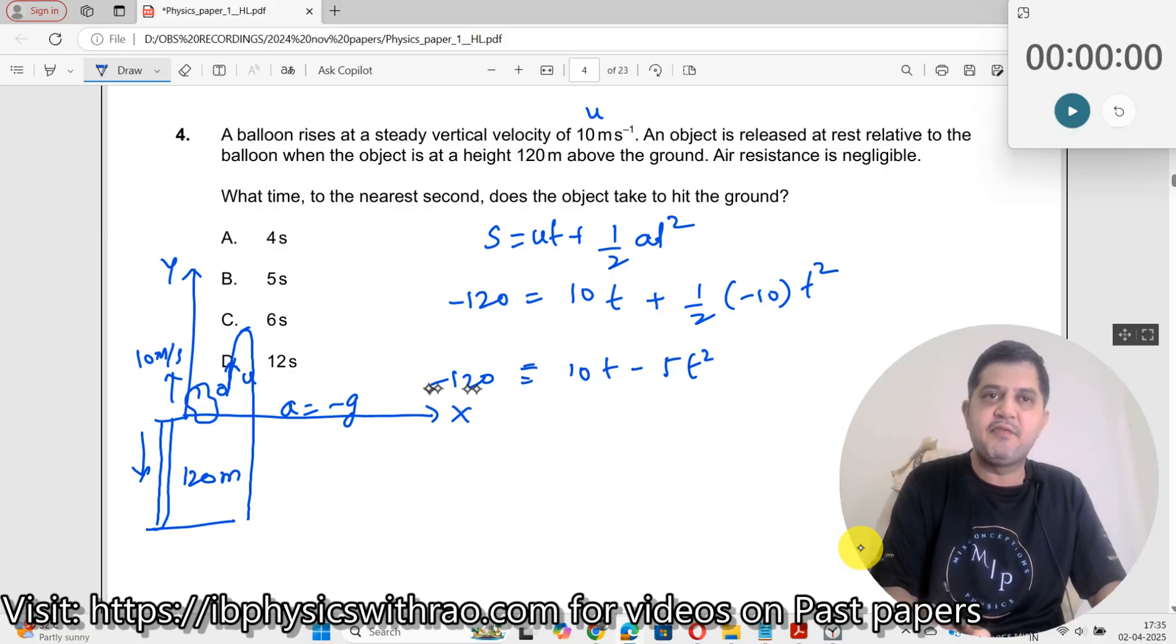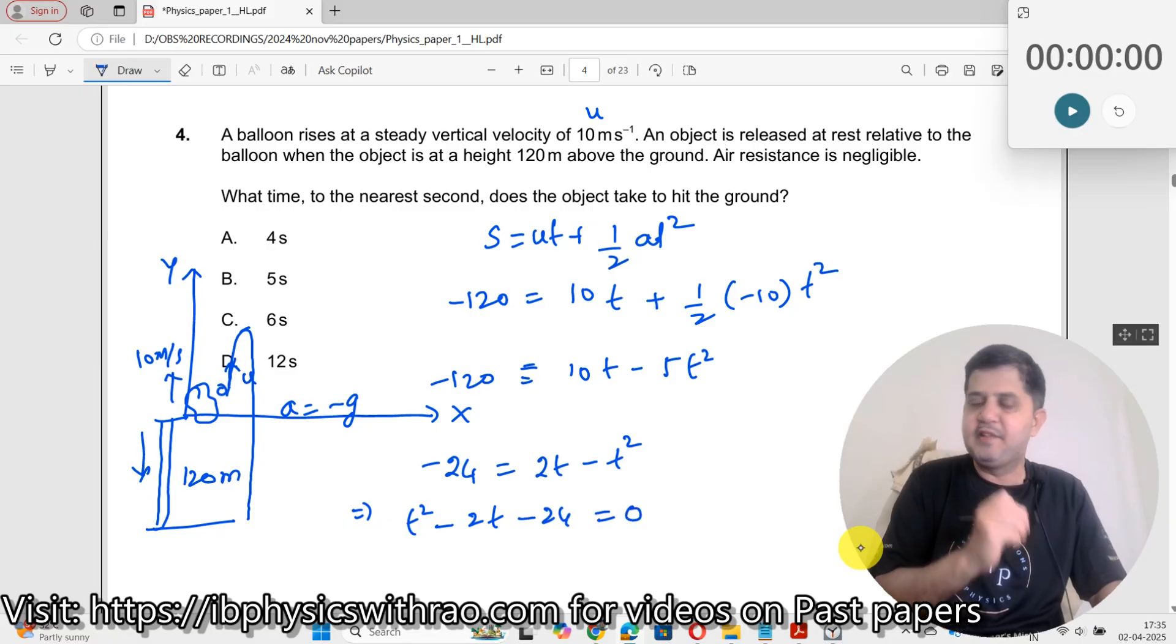I get this as, if I divide this by 5 universally on the left hand side and right hand side, I get minus 24 equals 2t minus t squared. Let me write it down once again, t squared minus 2t minus 24 equals 0.